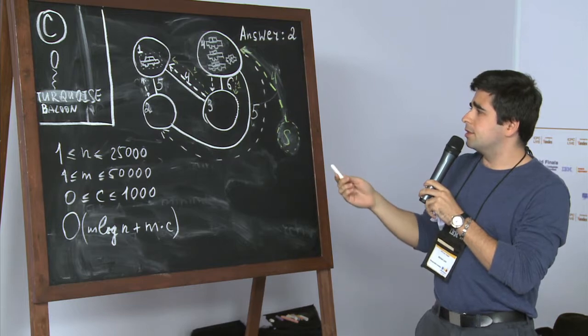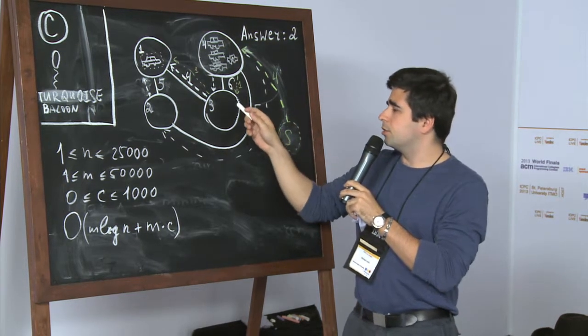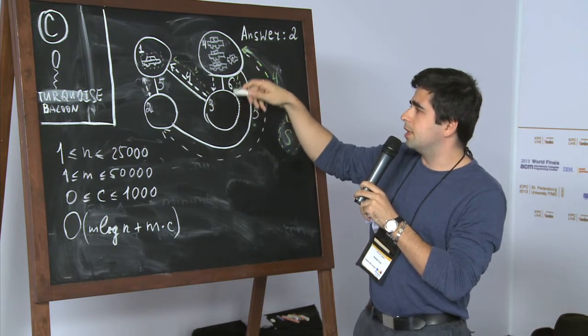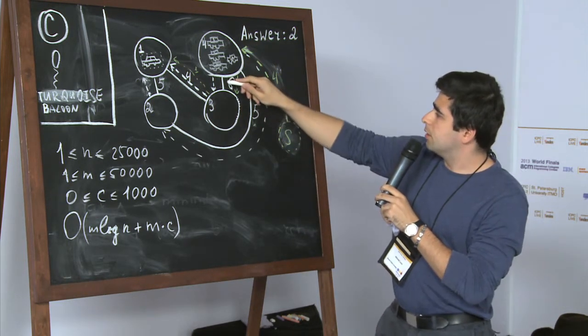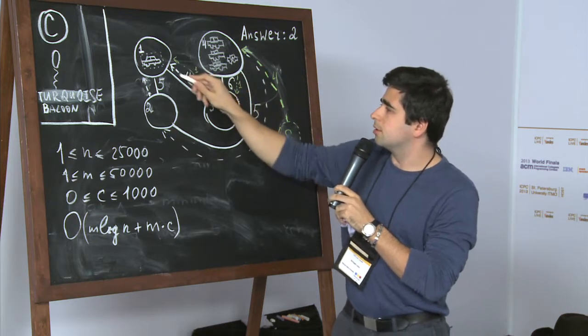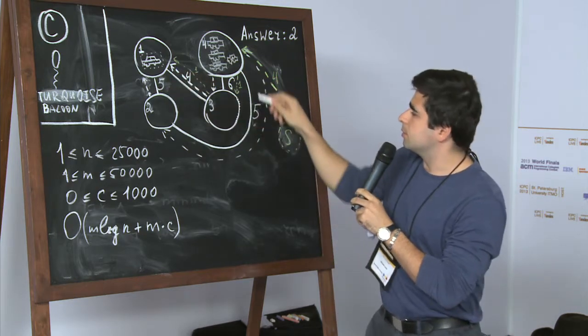In other than cities there are roads between them and each road has the time that it takes for any car to go through this road in any direction. For example, this is a road which takes six minutes to get and this one is four minutes, this one is five, this one is five.